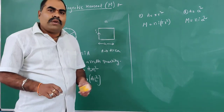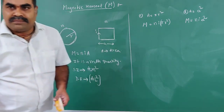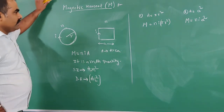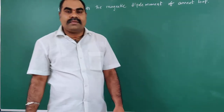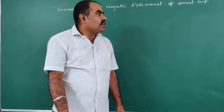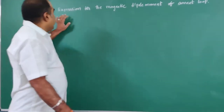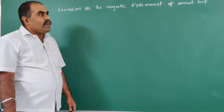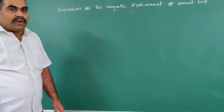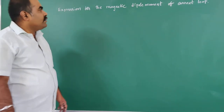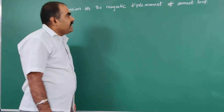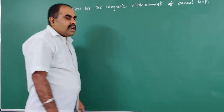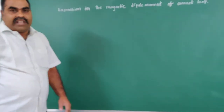Now we will go to one more topic: Expression for the magnetic dipole moment of a current loop. We want to derive this expression.